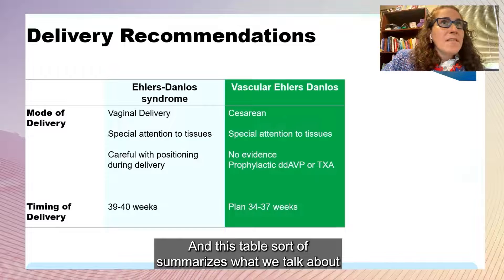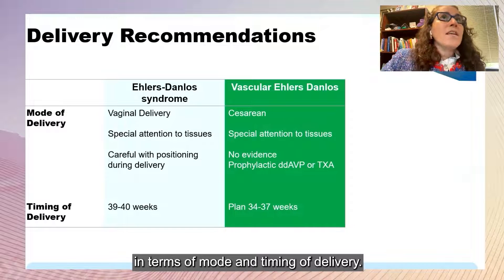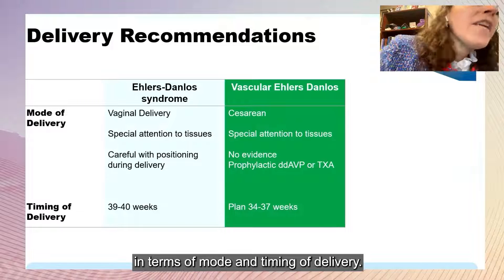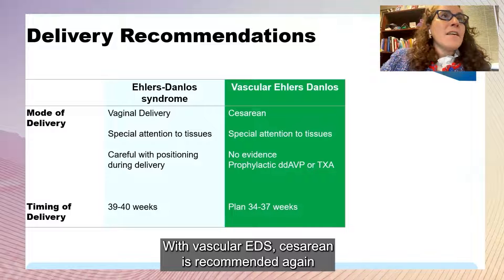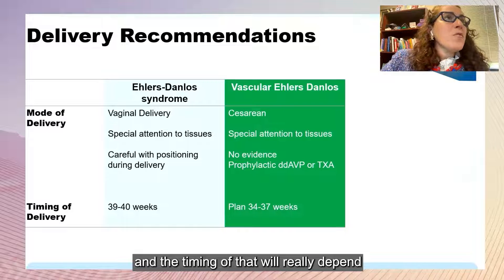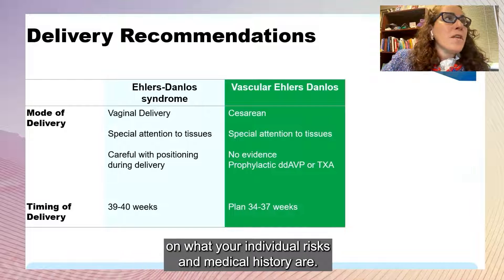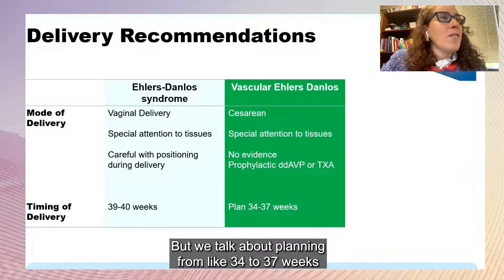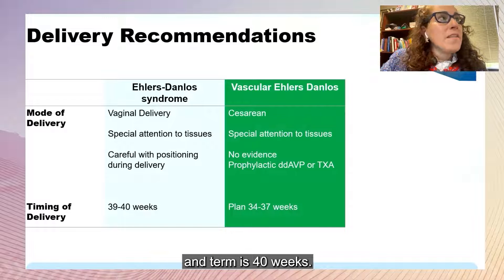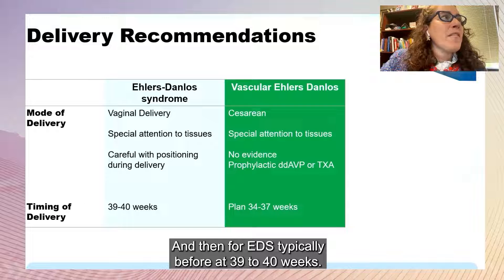This table summarizes what we talk about in terms of mode and timing of delivery. With vascular EDS, cesarean is recommended, and the timing will depend on your individual risks and medical history — we talk about planning from around 34 to 37 weeks, given that term is 40 weeks. For other types of EDS, typically delivery is planned at 39 to 40 weeks.